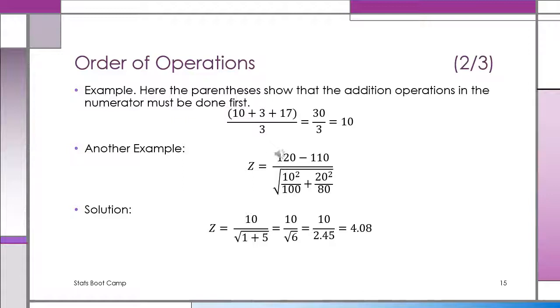Finally, 1 plus 5 is 6. We put that under the square root. Now we can do the square root. The square root of 6 is 2.45. Now we can finally do the original fraction, z equals 10 over 2.45, and it's equal to 4.08.